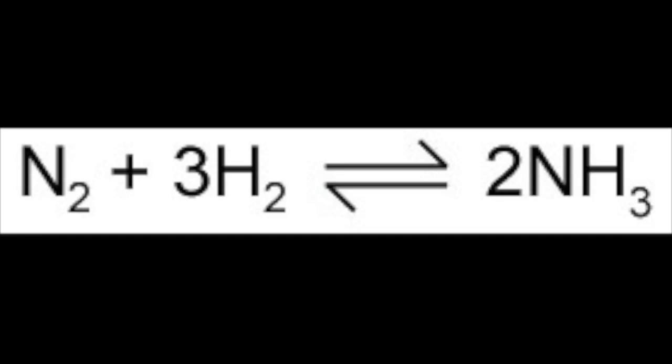You need to count the big numbers in front of each compound or element to work out the number of moles of gas on each side of the equation. Looking at the left-hand side of the Haber Process equation, one mole of nitrogen reacts with three moles of hydrogen — so there are four moles of gas on the left-hand side. However, on the right-hand side it's 2NH3, so there are two moles. So it's four moles left-hand side, two moles right-hand side.